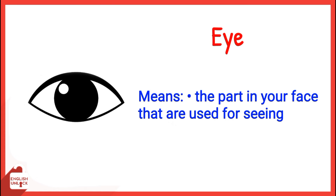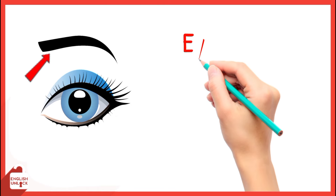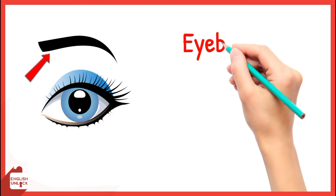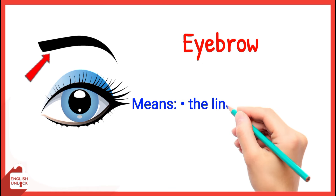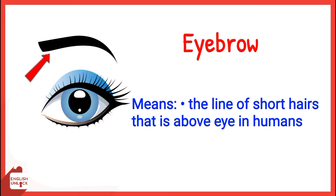Eye means the part in your face that are used for seeing. Eyebrow means the line of short hair that is above the eye in humans.